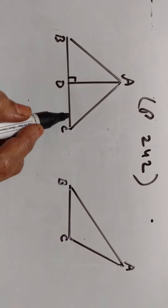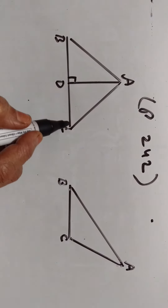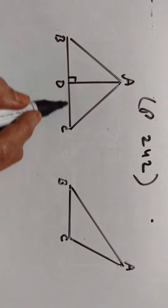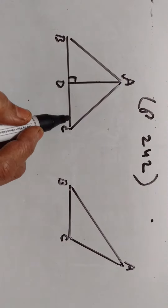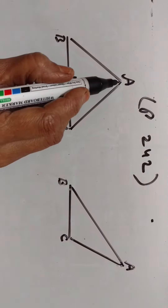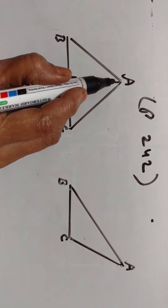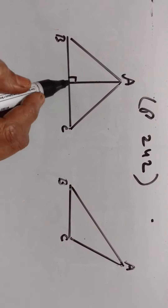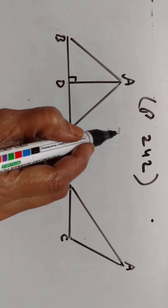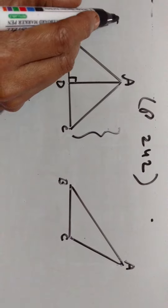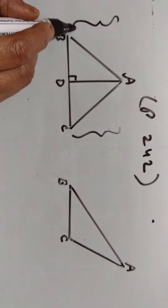In triangle ABC, BC is the base. And what is the height corresponding to this base BC? The perpendicular from the opposite vertex to this base. This is the height.